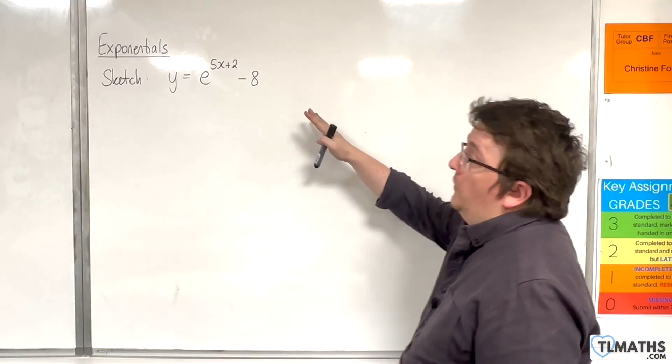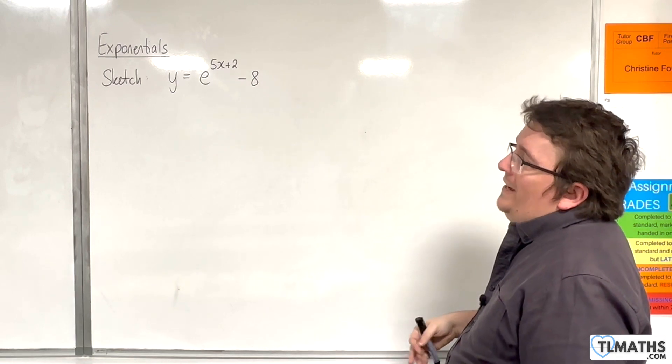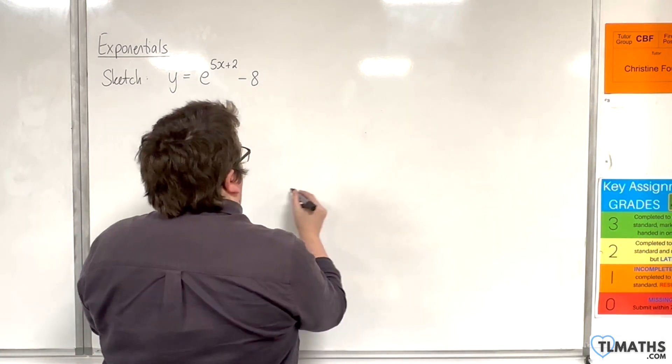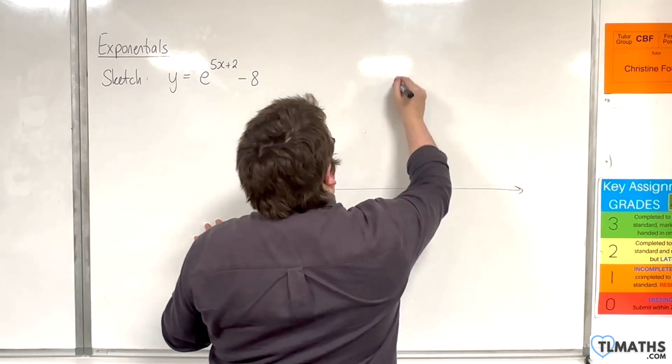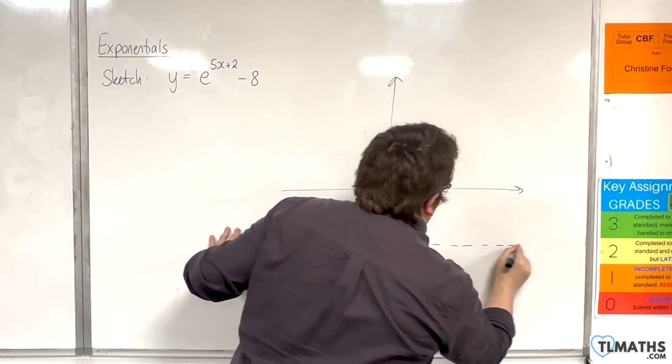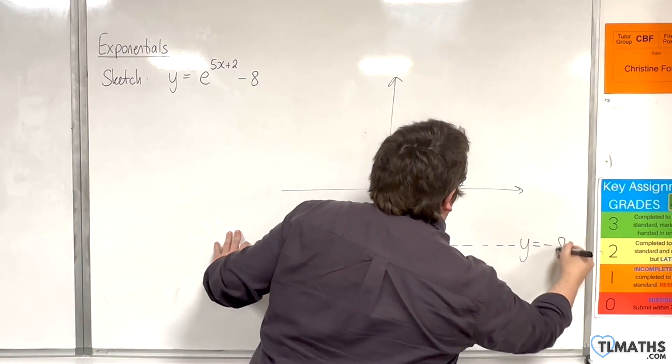In this video I want to go through this example, sketching y equals e to the 5x plus 2 take away 8. So first of all, draw my axes, and it's going to be a horizontal asymptote at y equals minus 8.